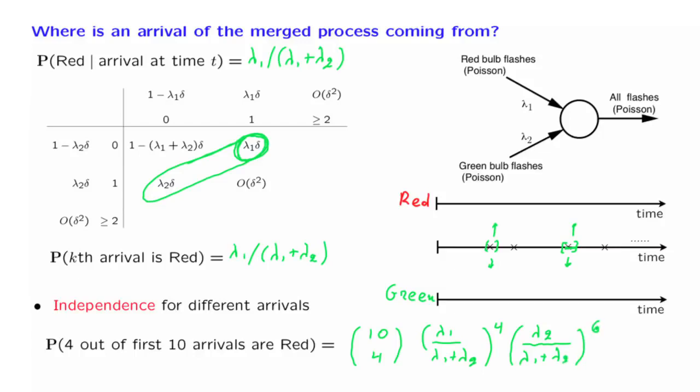So to summarize, each one of the arrivals in the merged process has a certain probability of being a red arrival or a green arrival. Which one of the two is the case? We can think of it as an outcome of a Bernoulli trial. And the Bernoulli trials associated with different arrivals are independent of each other as a consequence of the independence of Poisson processes across time.